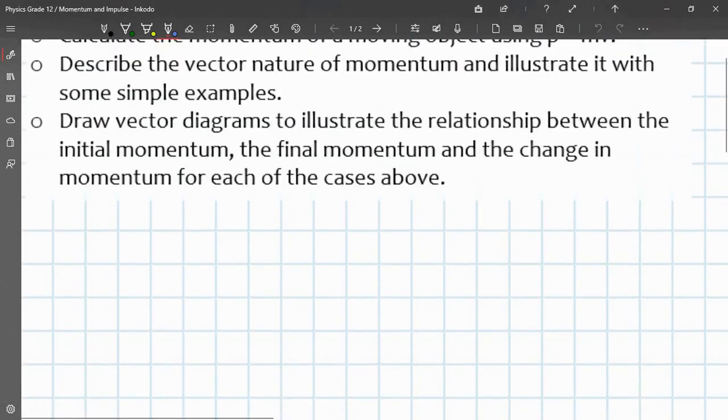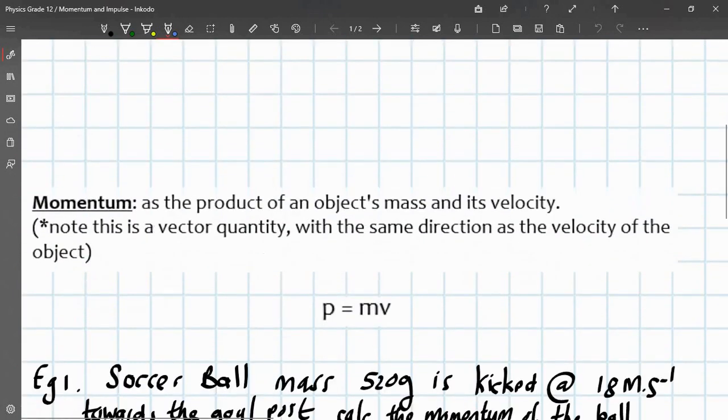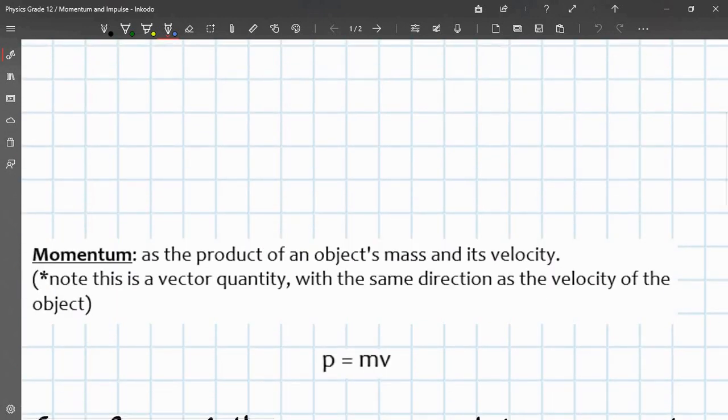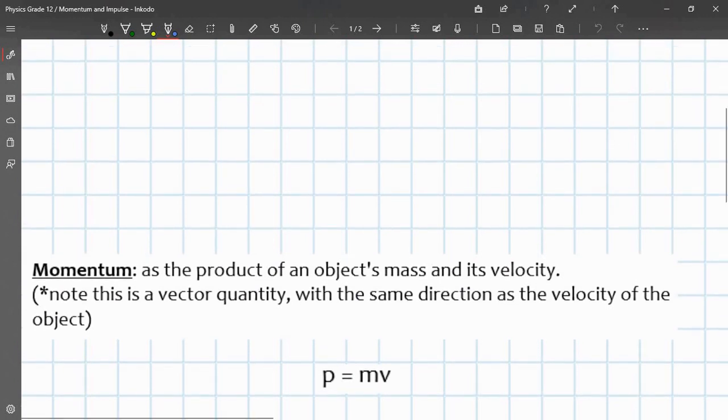So, momentum is p, is defined as, is given by the formula p equals mv, and is defined as the product of an object's mass and velocity. It also moves in the same direction as the velocity of the object. So, it's just simply the product of mass and velocity, and it's a vector quantity.